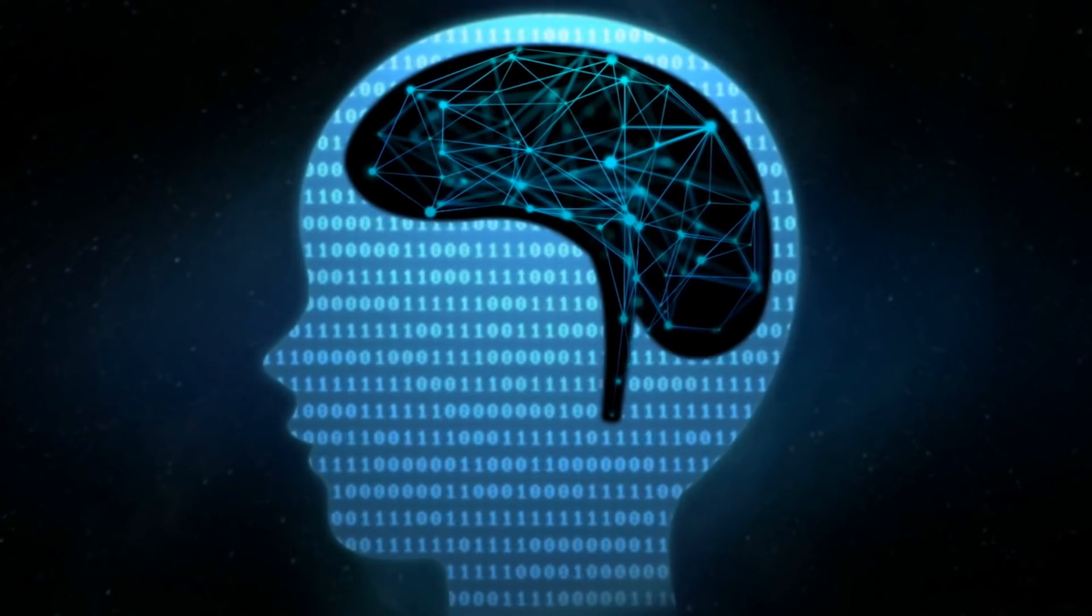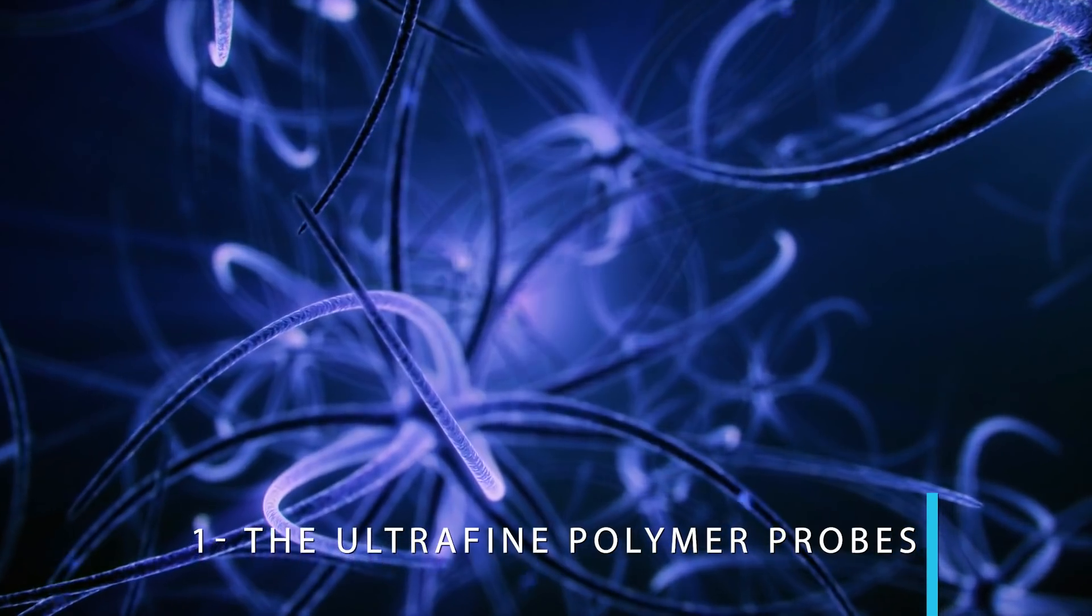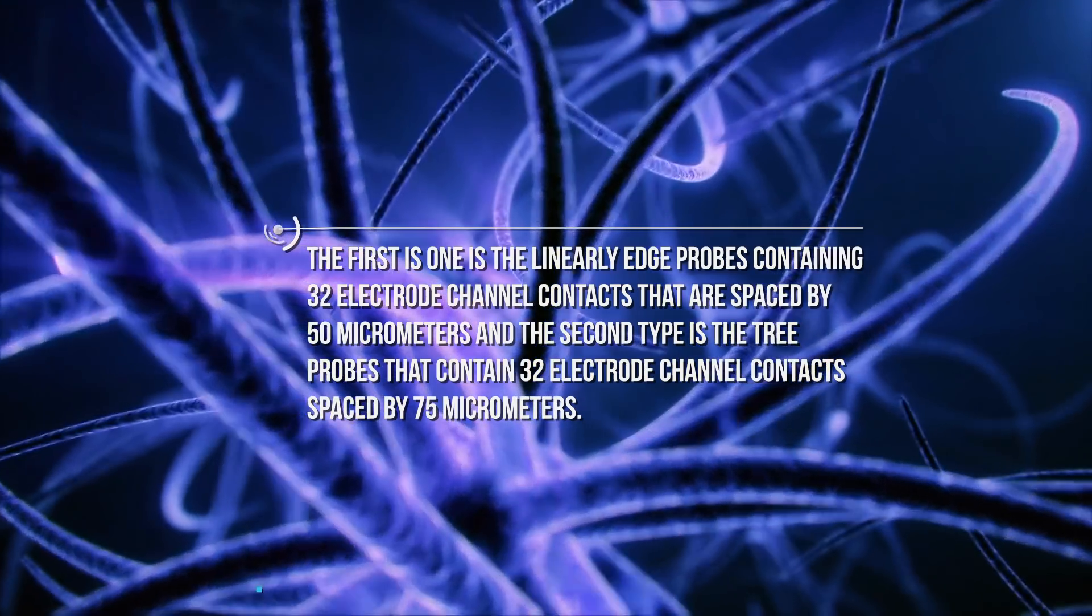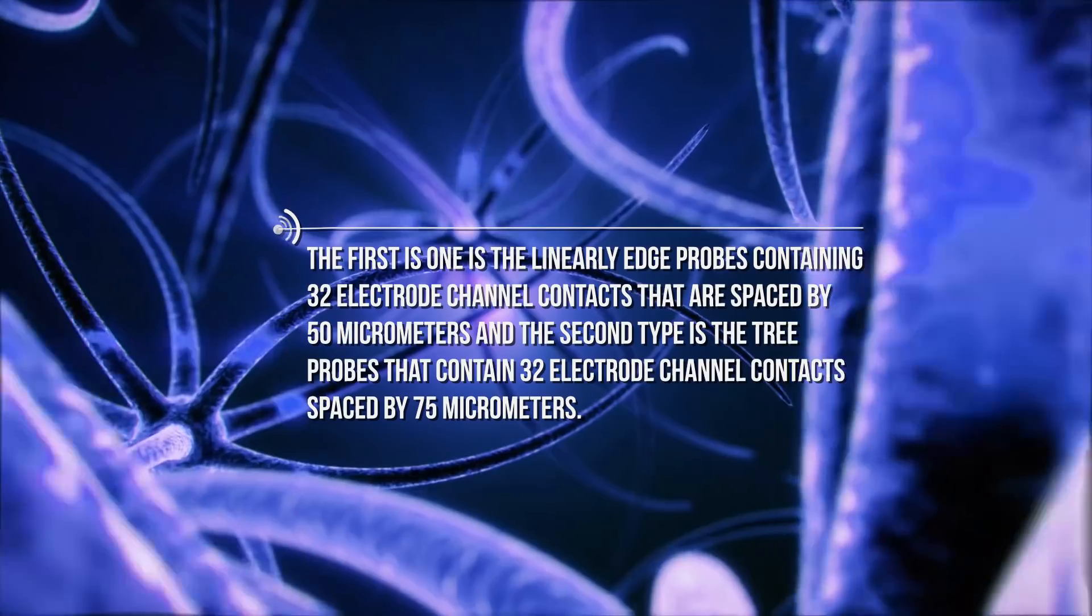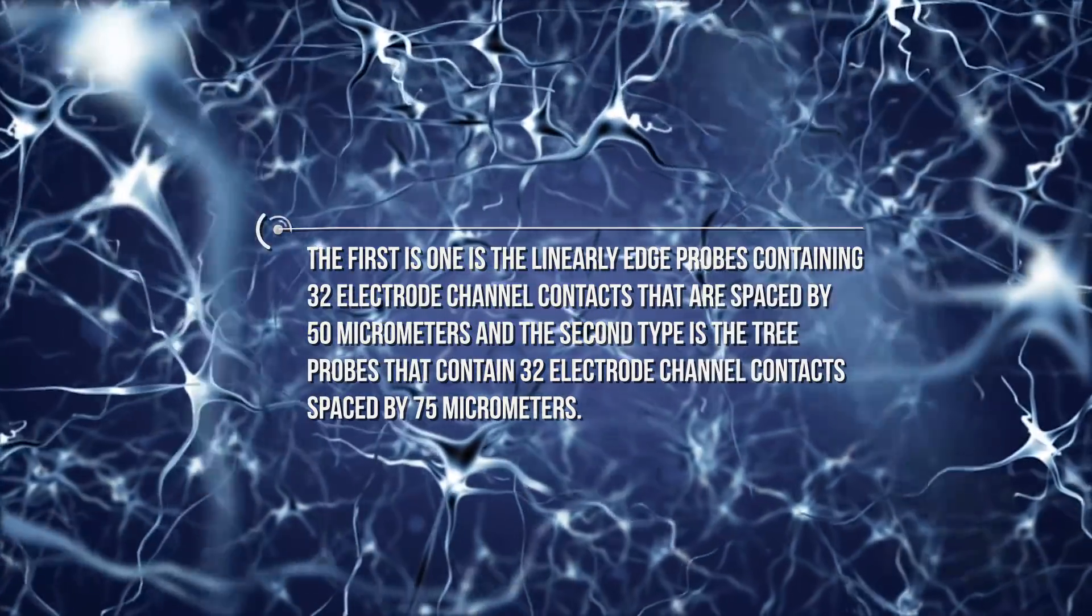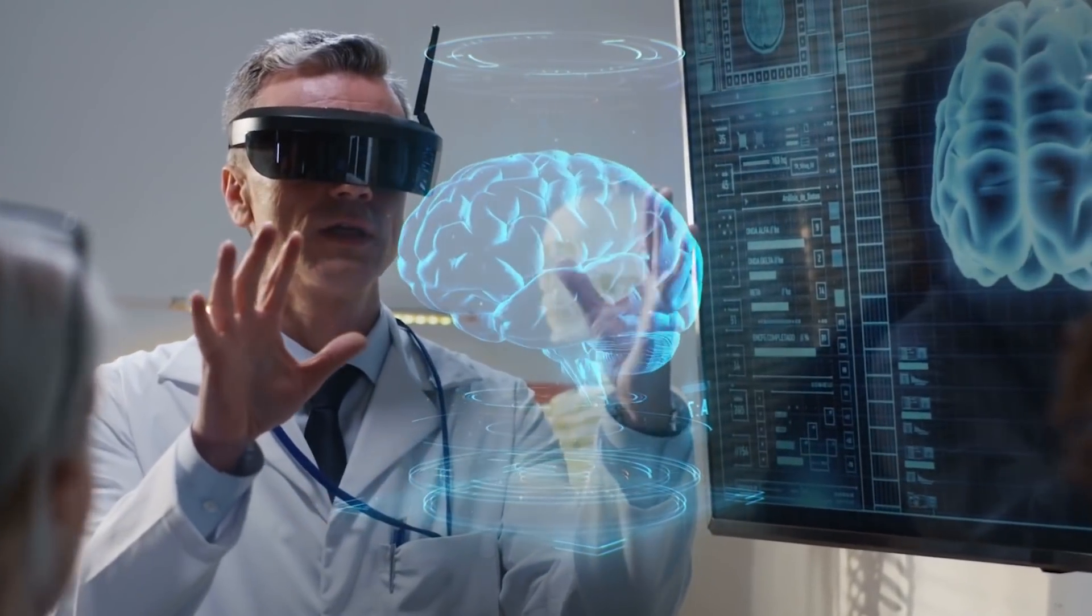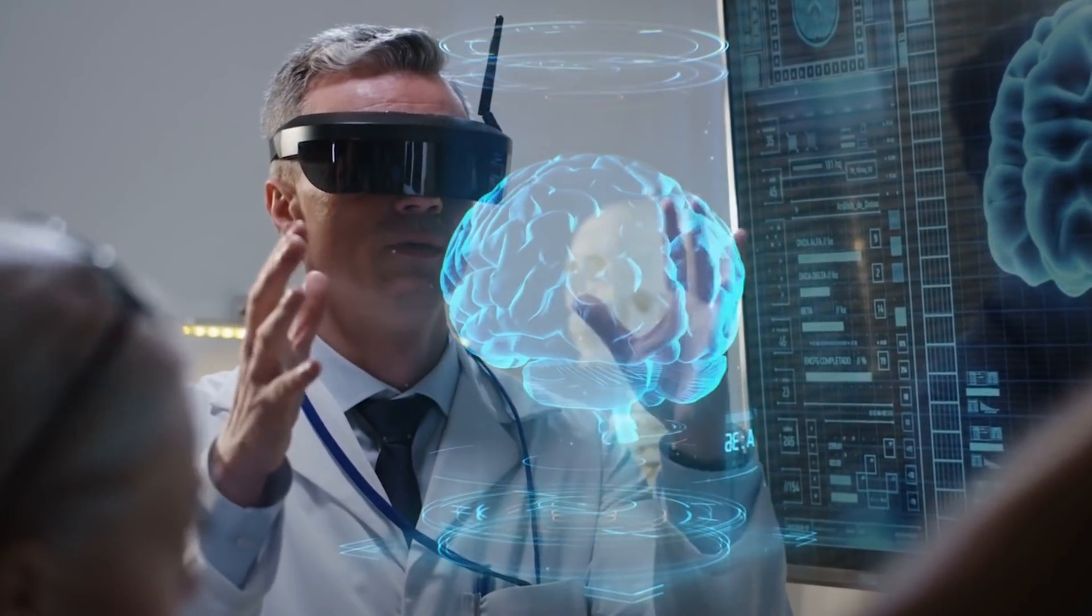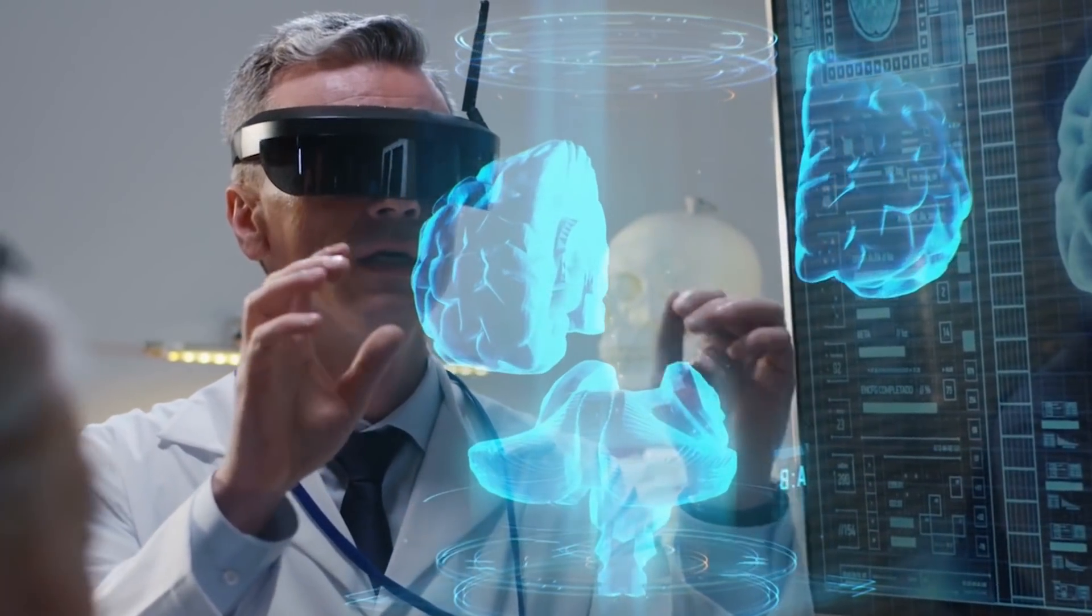That system has three main components. First, the ultrafine polymer probes, which are two main types. The first one is the linearly-edged probes containing 32 electrode-channel contacts spaced by 50 micrometers. The second type is the tree probes containing 32 electrode-channel contacts spaced by 75 micrometers. Moreover, to employ a variety of biocompatibility in thin-film materials, Neuralink has developed a specific process to fabricate minimally-displacive neural probes.